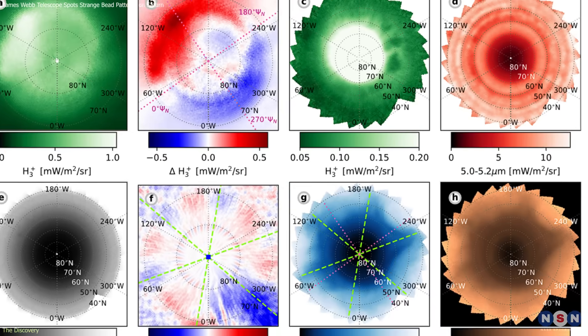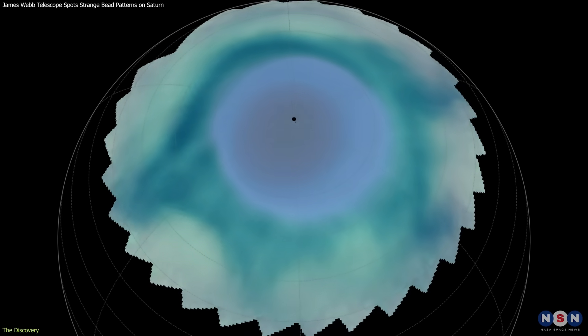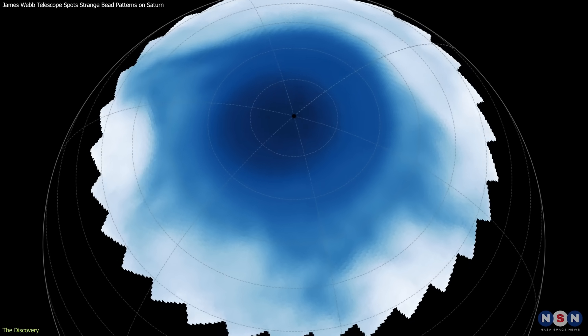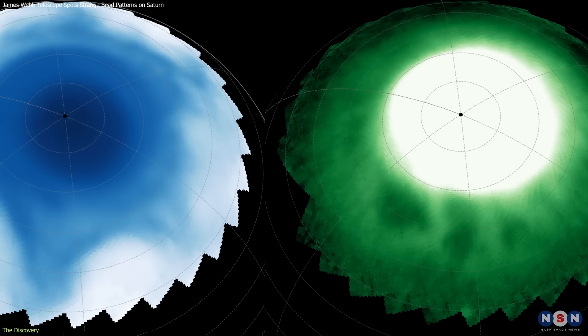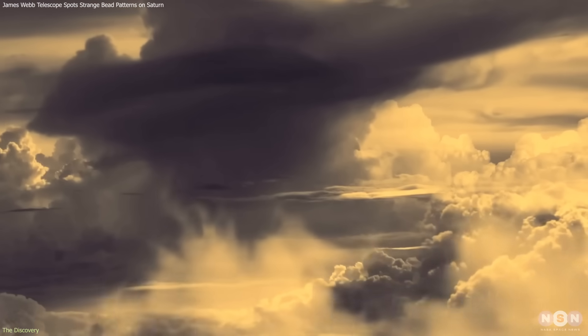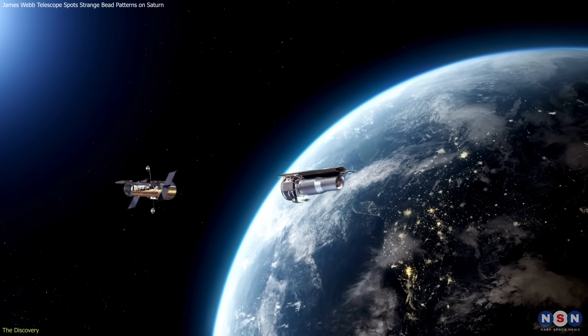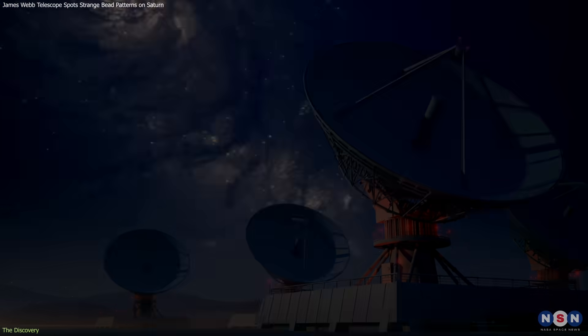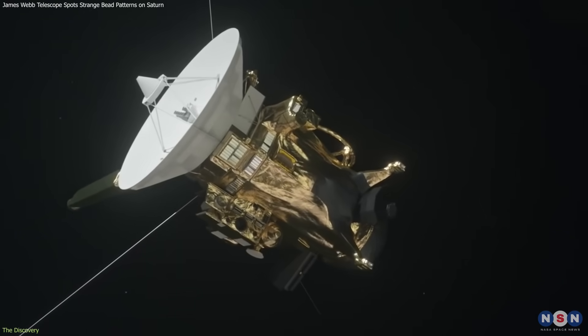When scientists compared the two layers, the darkest beads in the aurora seemed to align with the strongest arm of the star-shaped feature. The alignment suggested that processes in Saturn's upper atmosphere might be linked vertically across hundreds of kilometers. No telescope before it had the sensitivity to capture this. Ground-based observatories were blocked by Earth's atmosphere, and Cassini lacked the right instruments.